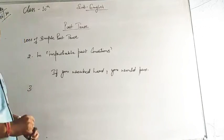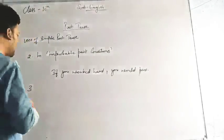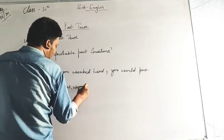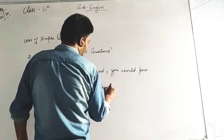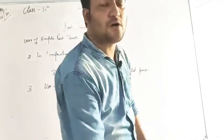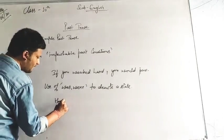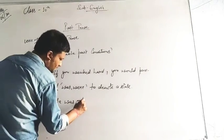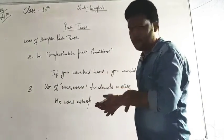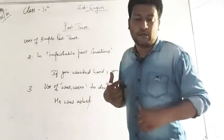The third use is the use of 'was' or 'were' to denote a state. For example: 'He was asleep.' This means that somewhere in the past, he was in the state of sleeping. 'He was asleep' describes a past state.